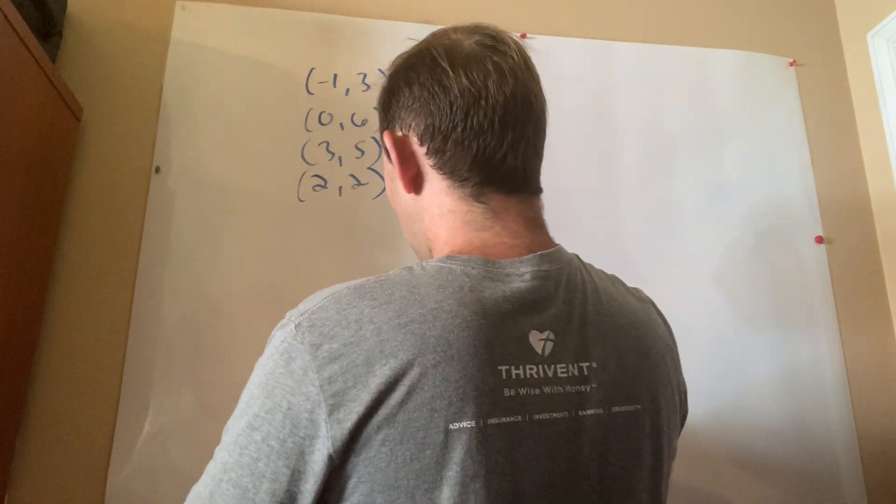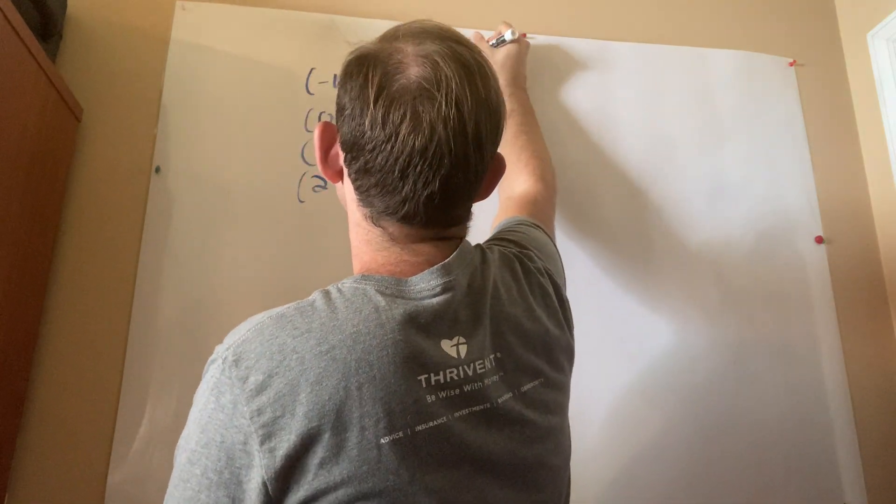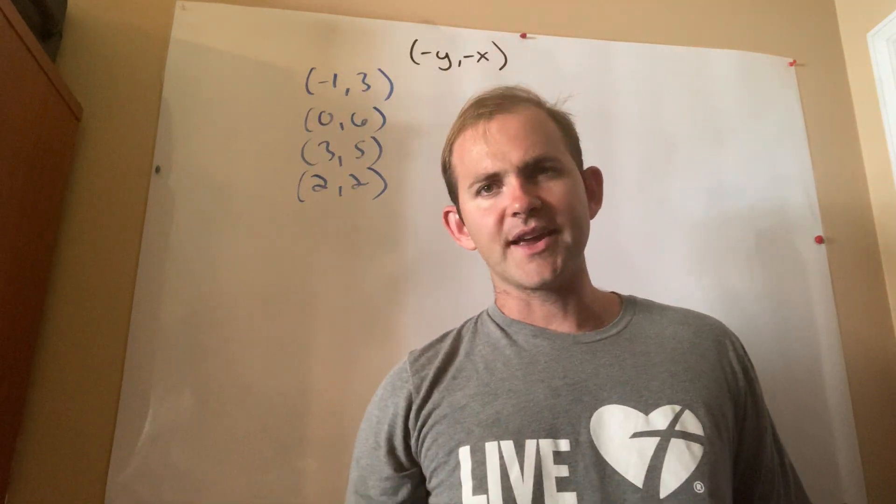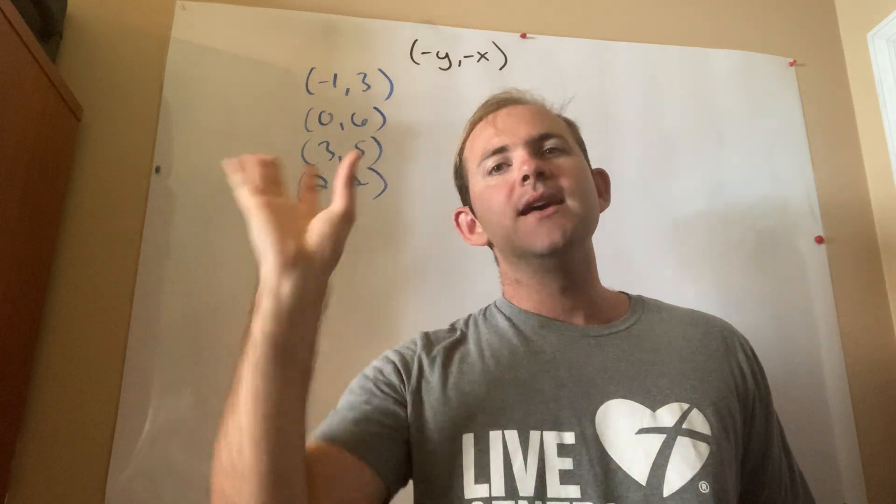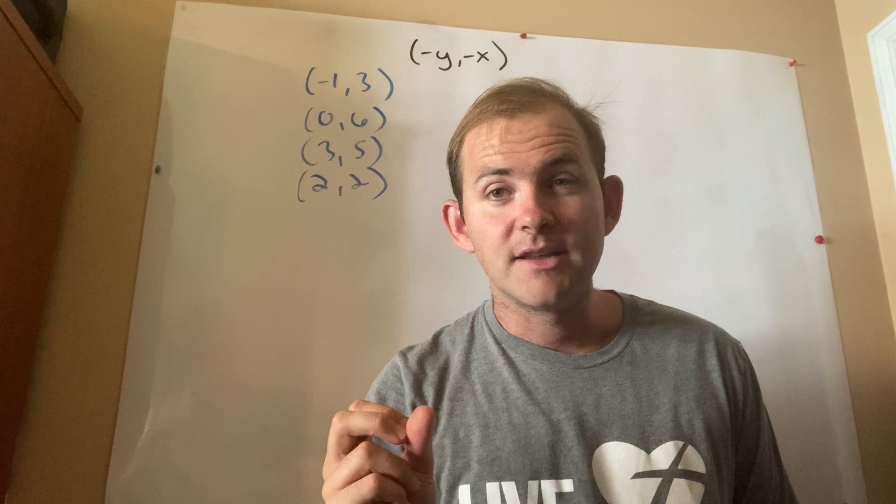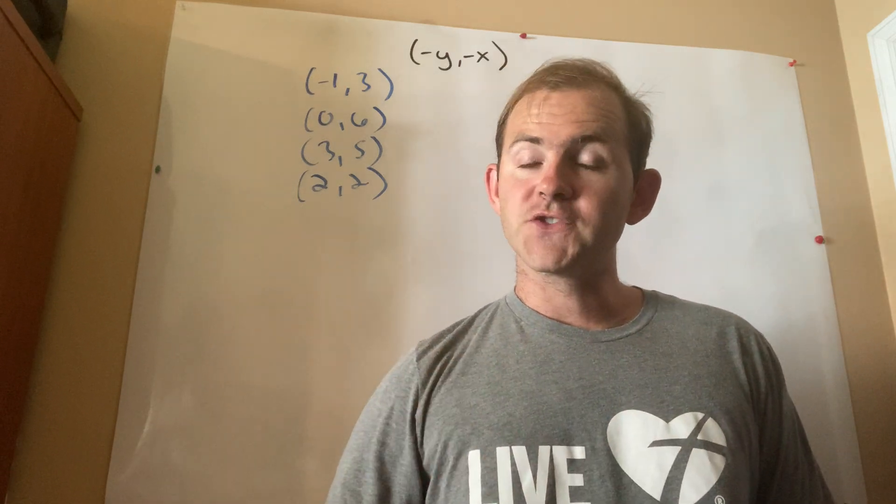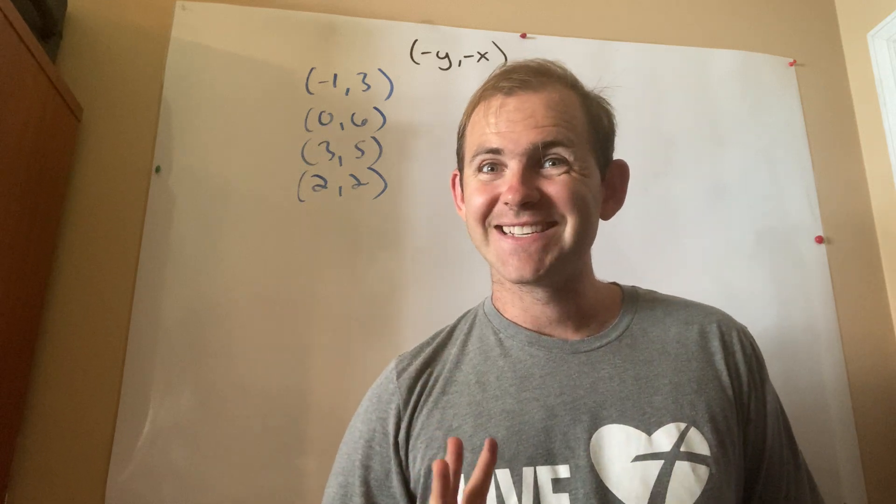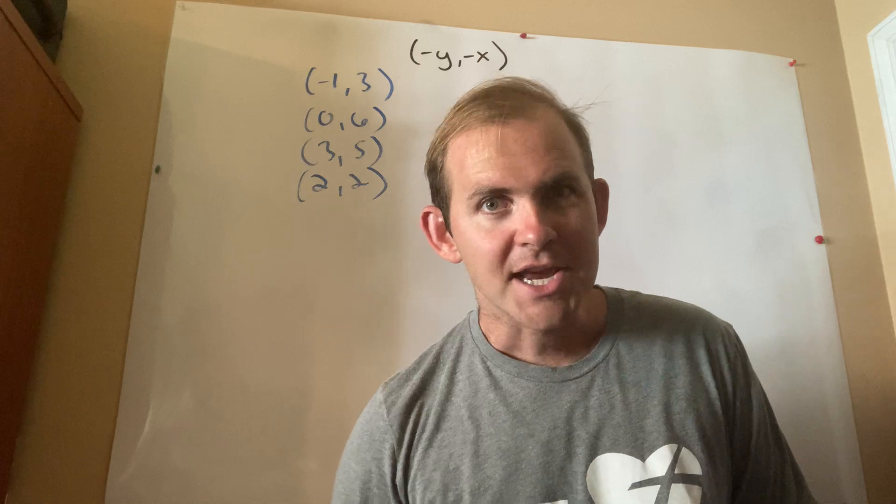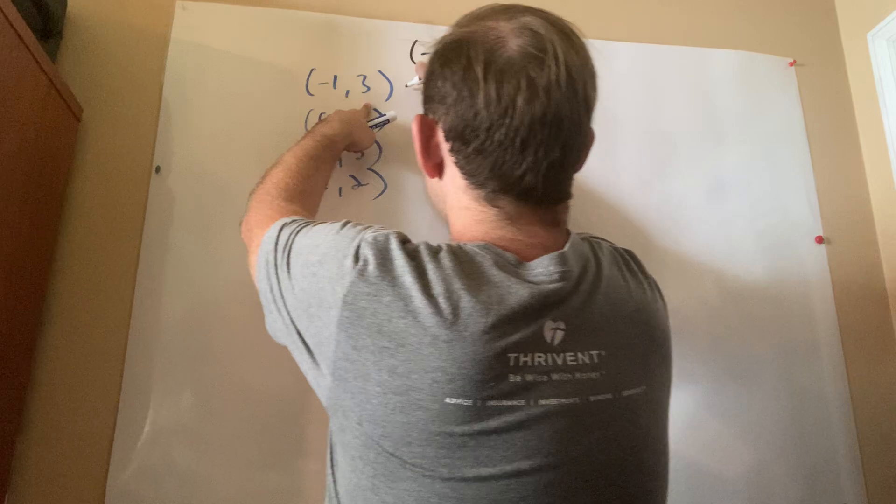So as a coordinate rule, what that's going to mean is I'm using this formula right here. Negative y comma negative x. So all I'm doing is I'm switching the numbers, but I'm also changing their sign. I'm switching the numbers, but I'm also changing their signs. So if it was positive, now it's negative. And if it was negative, now it's positive.